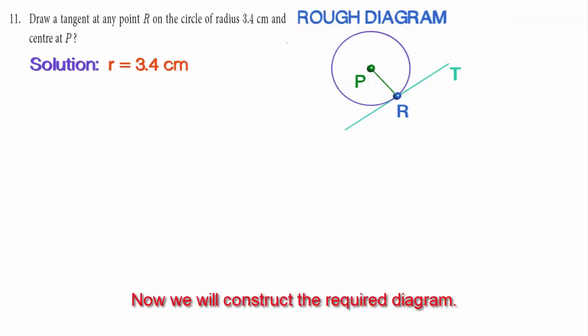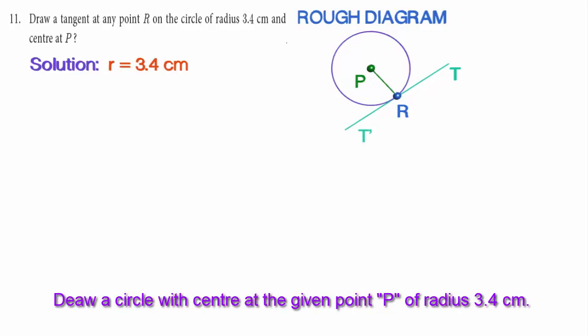Draw a tangent at a circle of radius 3.4 cm. Now, we will construct the required diagram. For this, draw a circle with center at the given point P of radius 3.4 cm.